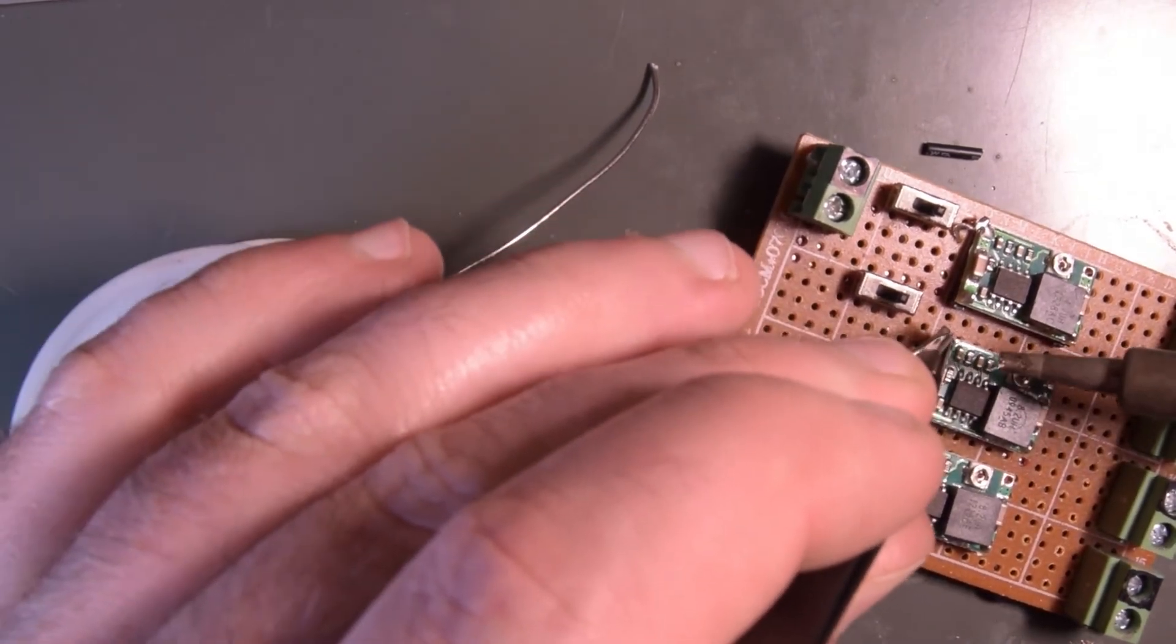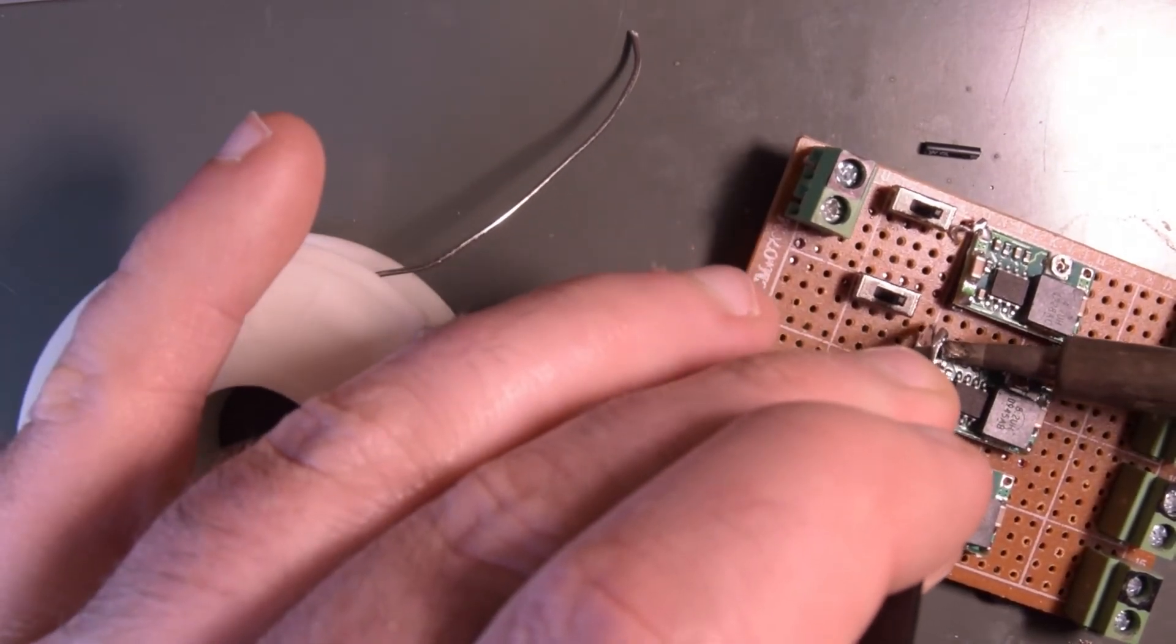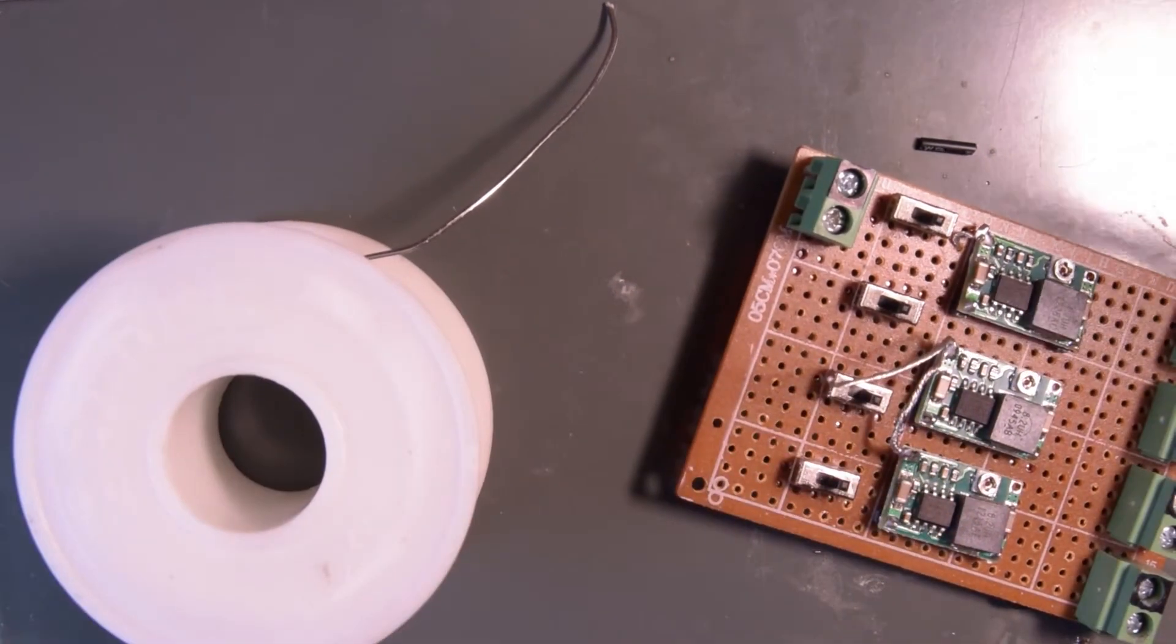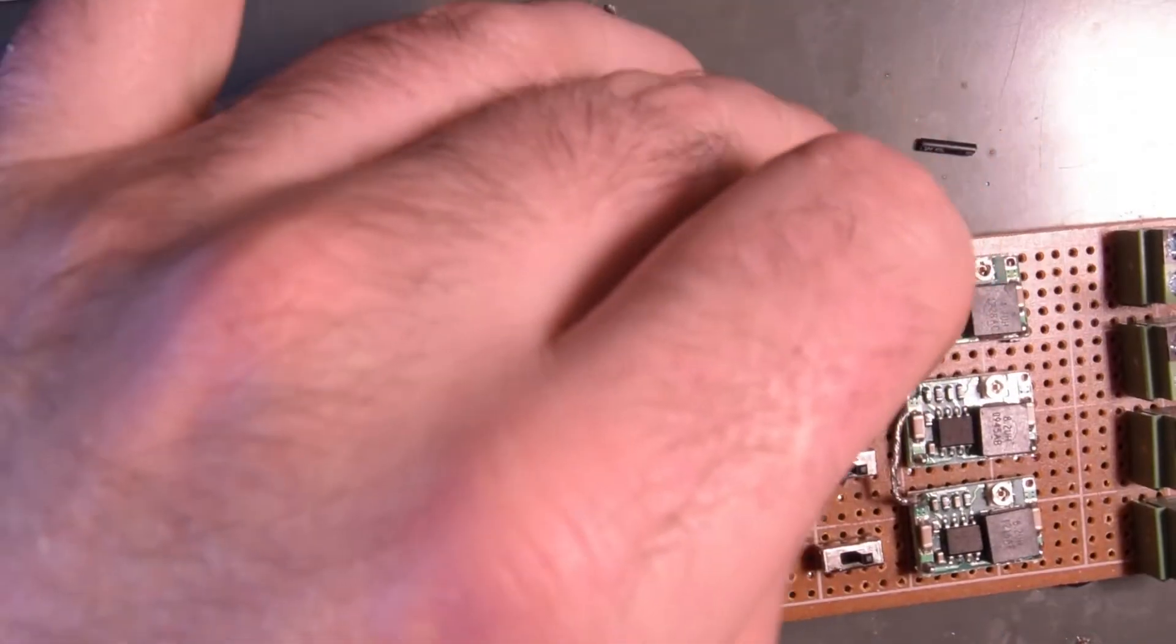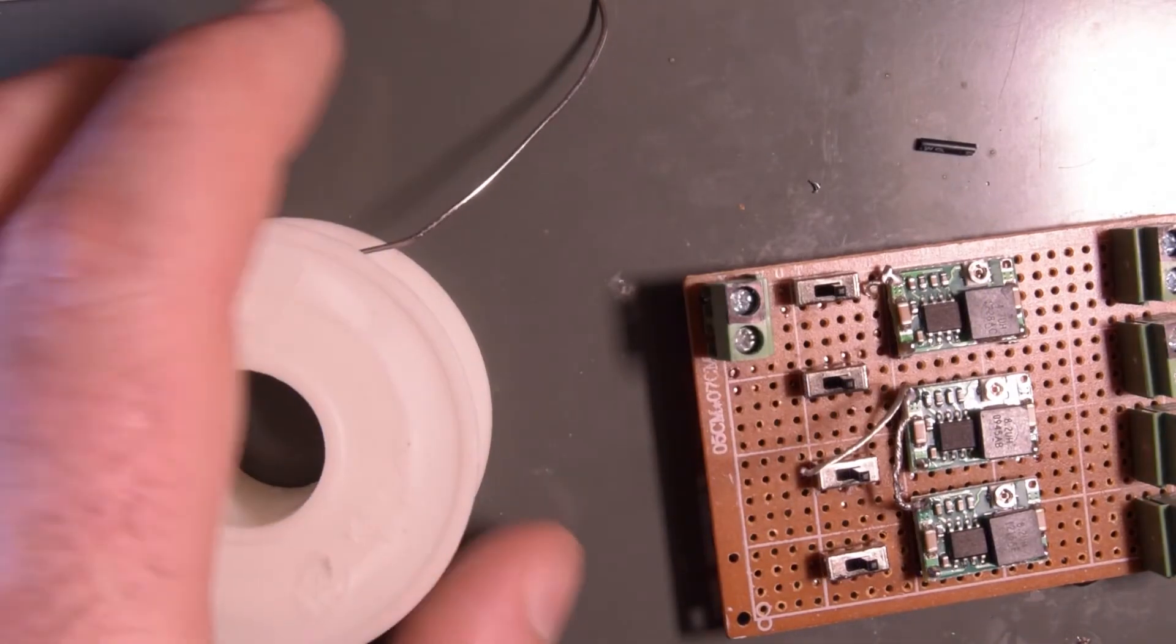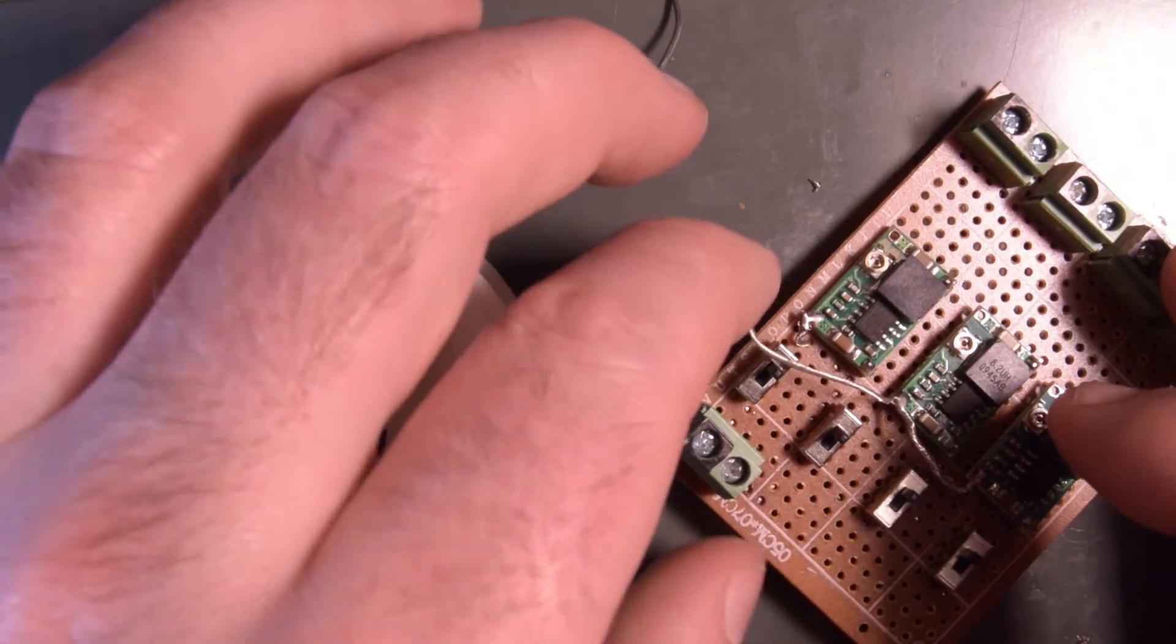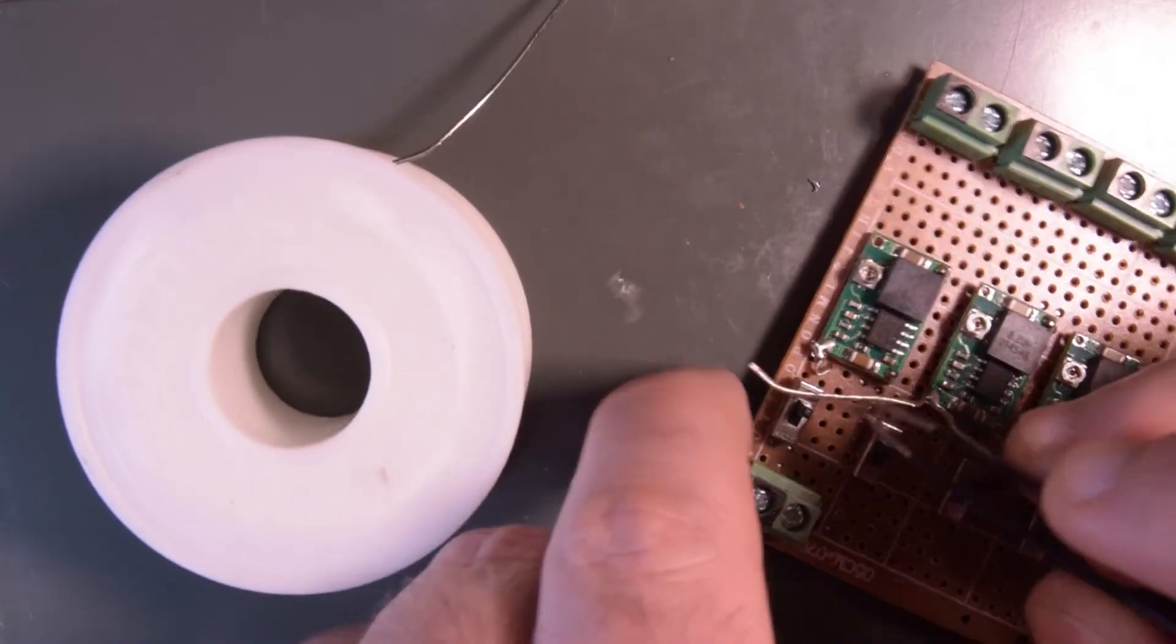A little bit of pre-tinning there. See if I can get this to sit down. It's actually soldered itself down, it's pretty nice. Okay, then all I have to do is solder these two together, trim the end, and this portion is done.